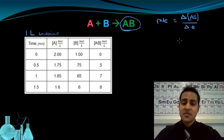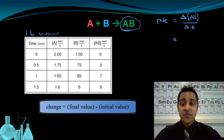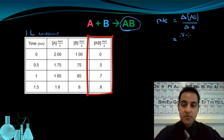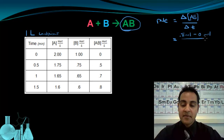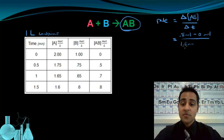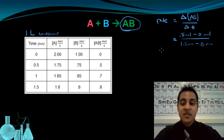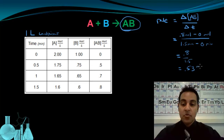Let's plug in some numbers. The change in concentration of AB: where AB ended up is 0.8, so 0.8 moles, and where it started was 0 — so 0.8 minus 0 moles. Divided by the change in time: the time where it was 0.8 is 1.5 minutes, so 1.5 minutes minus the initial time of 0. This gives the rate of formation of the product: 0.8 over 1.5, which equals 0.53 moles per minute. This is the rate of AB.